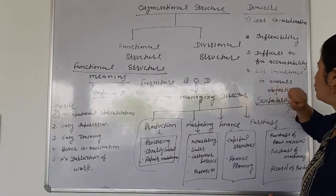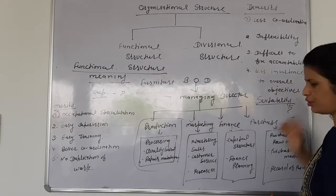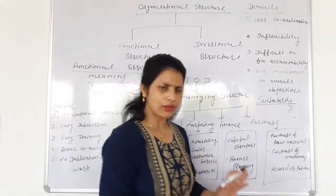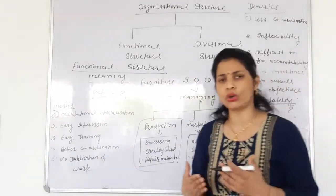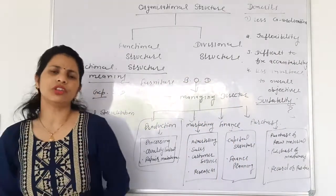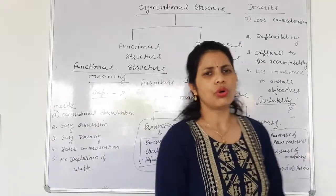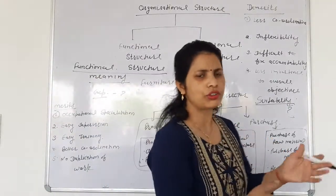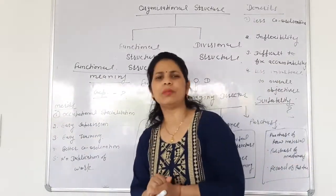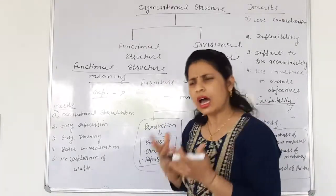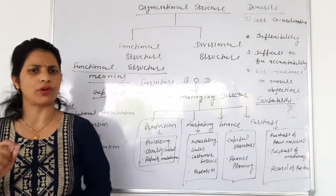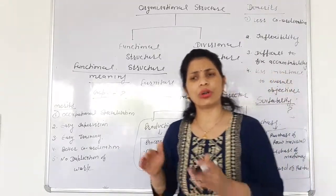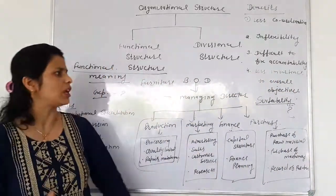Less importance to overall objective means every department wants to achieve their own goal. Every department is doing efforts to achieve their own goal. The departmental managers ignore the organizational goal. Sometimes all employees do not perform work in coordination and do not make efforts for achieving the organizational goal. In this way, sometimes our organizational goals are not achieved.